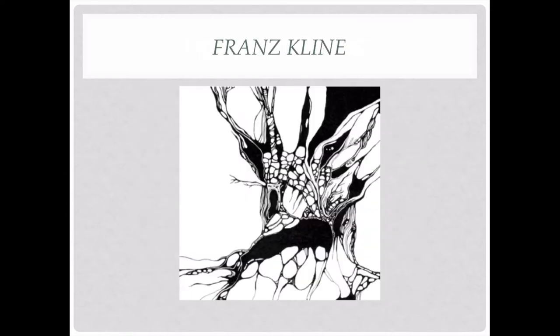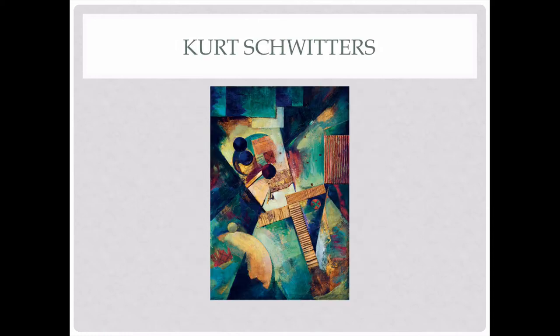Franz Klein again uses darks and contrasts them with lights to create that T composition. It's not even Steven, as they say — there are larger blacks and smaller blacks. But when you squint, the composition becomes an X. That's your goal. Schwitters did the same thing here, creating that T. He's a little more obvious. I call it a T and I call it an X, so it can be both.